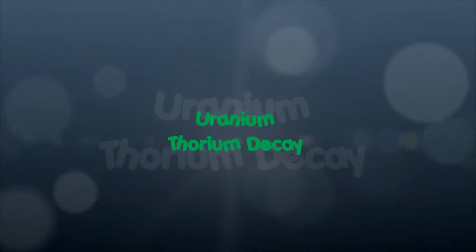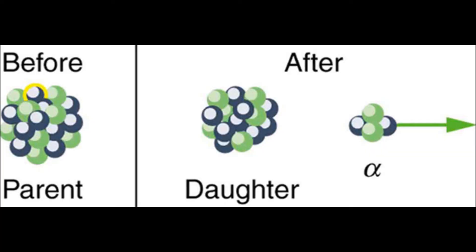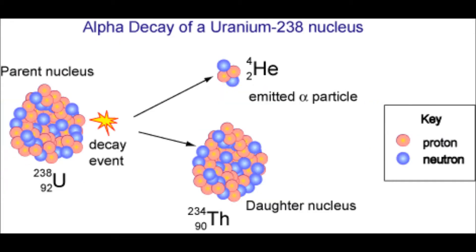The decay of uranium involves a series of decays. First, uranium decays to thorium and then to lead. Uranium-thorium is another part of uranium dating. In this decay process, an alpha particle is released. The decay of uranium to thorium involves the parent nucleus and the daughter nucleus. The parent nucleus is uranium-238 and the daughter nucleus is thorium-234.